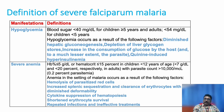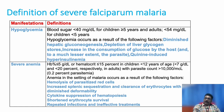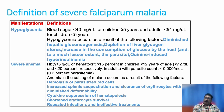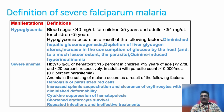Severe anemia can occur in malaria for various reasons: hemolysis due to sequestration causes hemolytic anemia; patients losing blood from the GI tract due to thrombocytopenia can have anemia; splenomegaly in chronic malaria can cause sequestration and anemia; and infected RBCs can be destroyed in circulation very fast, shortening RBC lifespan. The most important reason for anemia is hemolysis.